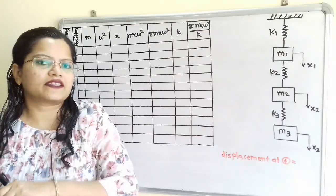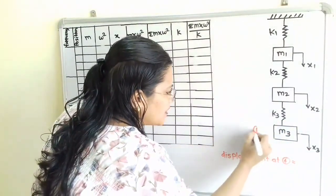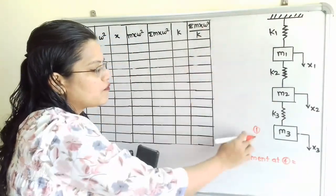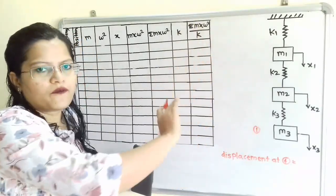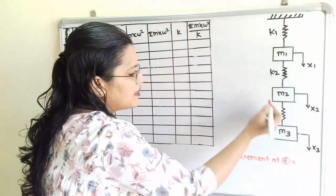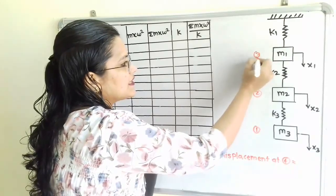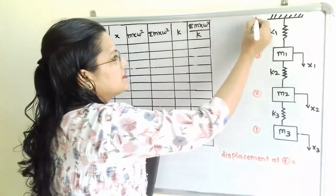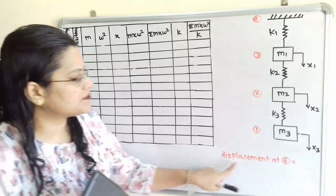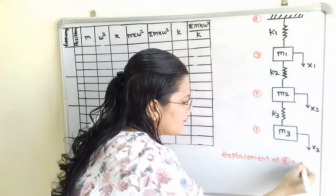We will first assign the positions. We will assign position number 1 for mass M3, position 2 for mass M2, position 3 for M1, and position 4 for the fixed end. We can assign positions from upward to downward or downward to upward — in any direction. Since this end is fixed, the displacement at position 4 is equal to 0.